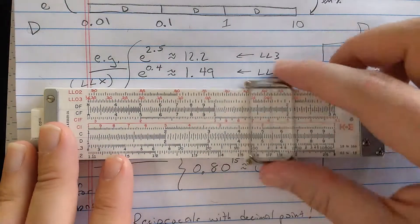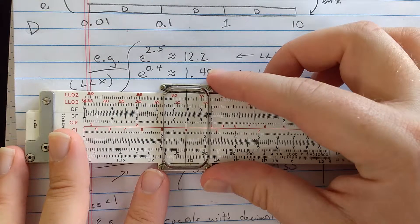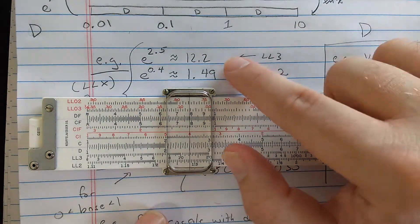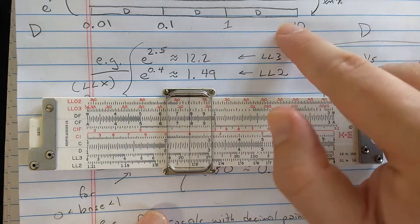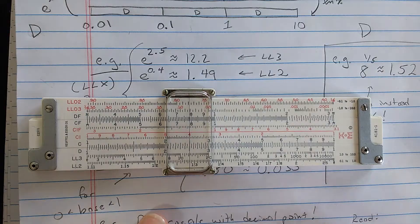Now the nice thing is, so here I want to find E to the 2.5. I simply find 2.5 on the D scale, read the result, 12.2. So here, 2.5 is here, should be reading log-log 3, 12.2.